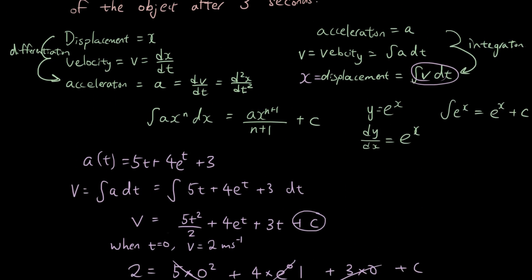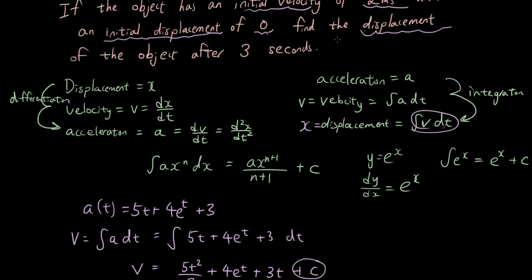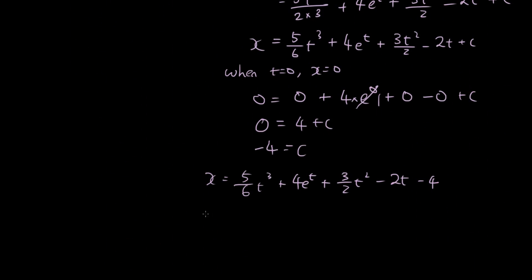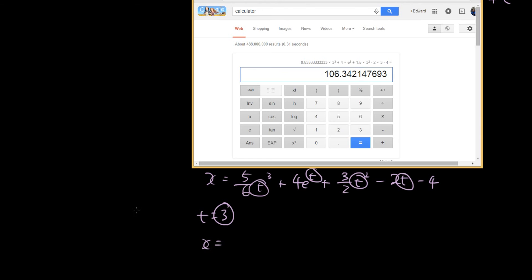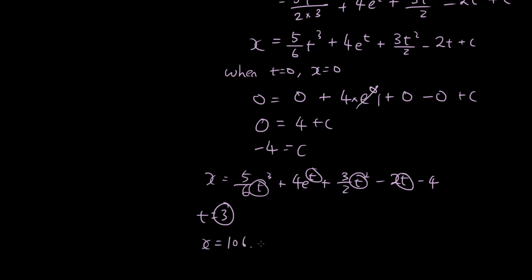The last step is to find the displacement after 3 seconds. Substituting t = 3 into the displacement equation and calculating, the answer is 106.34 meters.